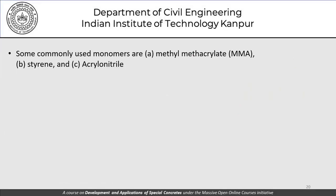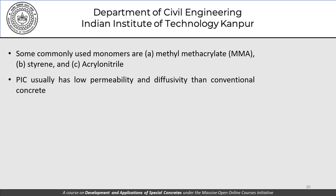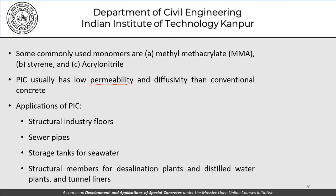Commonly used monomers for PIC include MMA, styrene, and acrylonitrile. PIC usually has lower permeability and diffusivity than conventional concrete — obviously, since some pores have been filled. Applications of PIC include structural industrial floors, sewer pipes, storage tanks for seawater, structural members for desalination and distilled water plants, and tunnel liners — wherever normal concrete is first cast and then impregnated with polymers.